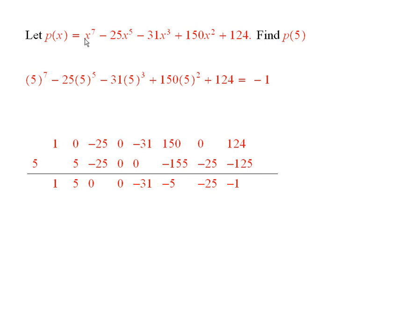So I have a 1 for the x to the 7th, a 0 here for x to the 6th, a minus 25 for x to the 5th, and then I have a 0 for x to the 4th, a minus 31 for the x to the 3rd, a 150 for x squared, and then there's a 0 for the x because there isn't any x term here, and then 124. So I put the 5 here.